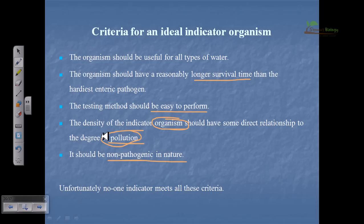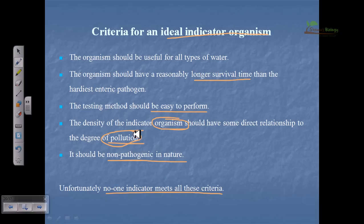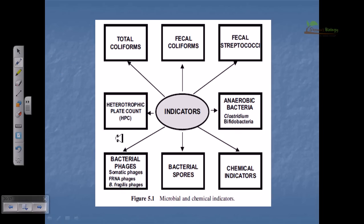If an organism contains all those previously mentioned criteria, it would be called an ideal indicator organism. However, no such ideal indicator organism exists — some have certain important characteristics but not all. Therefore, we need to take more than one microorganism into consideration. That is the key take-home message. There are different types of indicators that can be utilized to monitor the type of pollution in a water sample.